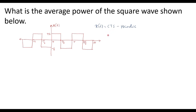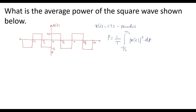The power of the signal is calculated using the formula P = 1/T times the integral over one period. This is the formula used to calculate the power of the signal. To find the average power of the square wave, we consider one cycle of the signal — from t = 0 to t = T.